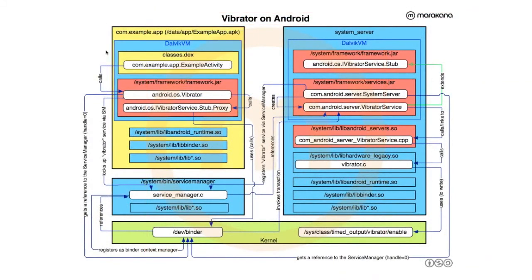The vibrator service is easy because it doesn't involve as many moving parts. This is the vanilla AOSP implementation, which may differ from what you have on your device — especially since there are companies that specialize in providing better haptic implementation in both software and hardware, which AOSP doesn't embrace because it's closed-sourced. So this is actually what the vibrator stack looks like on a Galaxy Nexus device. Most of these slides are geared towards Galaxy Nexus and Ice Cream Sandwich.